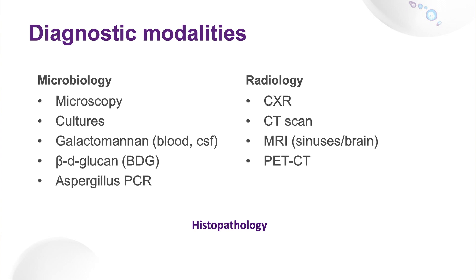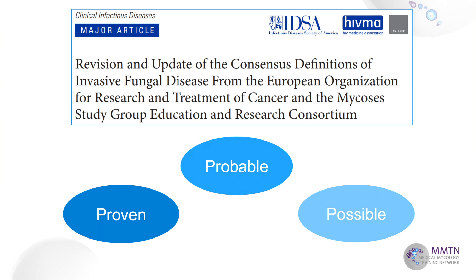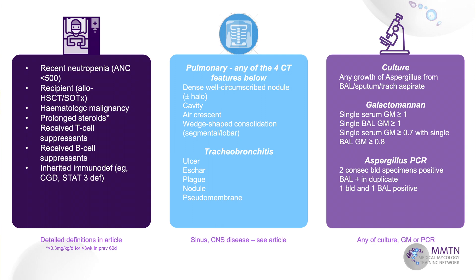For diagnostic modalities, we use the EORTC guideline. The patient has to fulfill all these categories: first, the right type of patient — classically immunosuppressed, transplant recipients, those on CNIs or steroids. There must be a compatible clinical picture. For pulmonary aspergillosis, the clinical features are purely radiologic, whereas diagnosing tracheobronchitis necessitates bronchoscopy to see ulcers or eschars in the large airways. The microbiologic criteria require one host factor, one clinical/radiologic factor, and either culture, galactomannan, or an Aspergillus PCR.